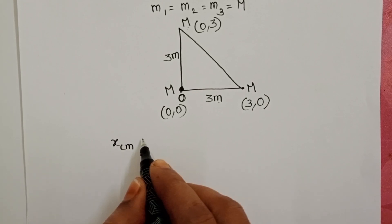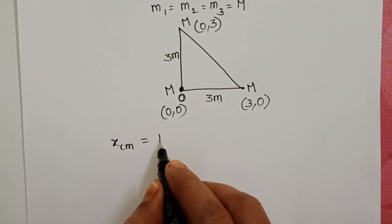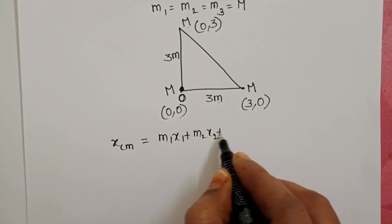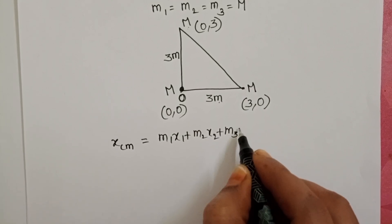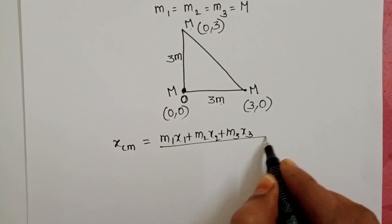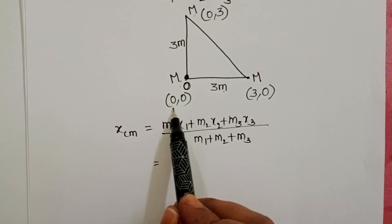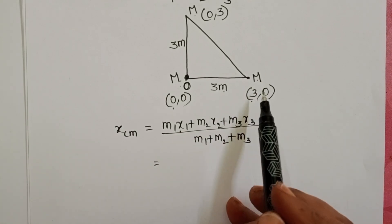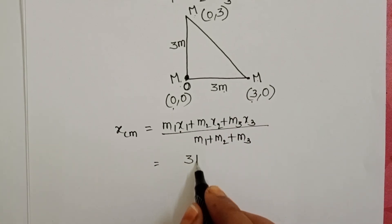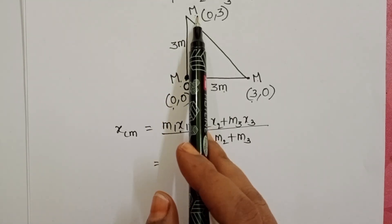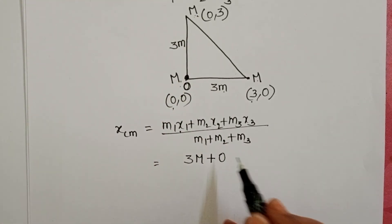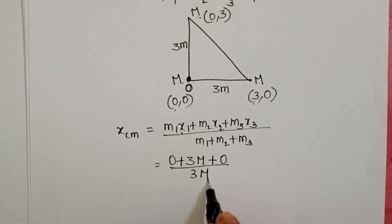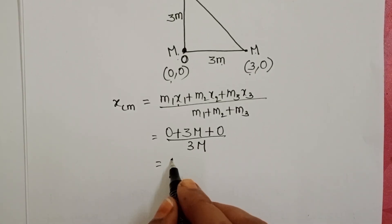The position of center of mass along the x direction: M1 x1 plus M2 x2 plus M3 x3 by total mass. M times 0, this term is 0, plus M times 3, that is 3M, plus M times 0. Total mass is 3M. So 3M by 3M, x_cm equals 1.